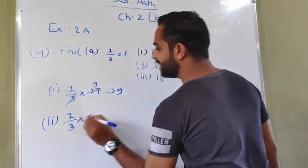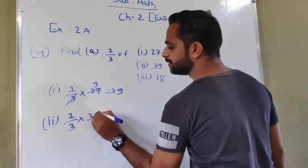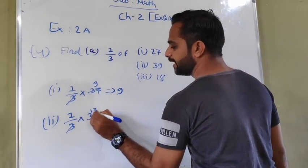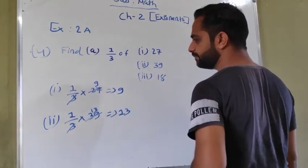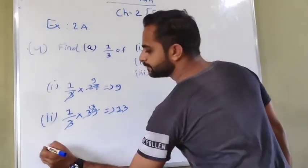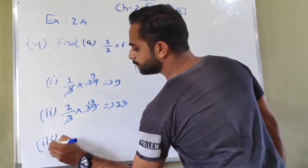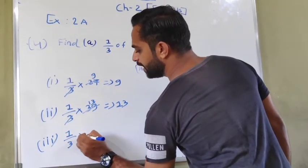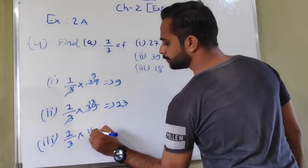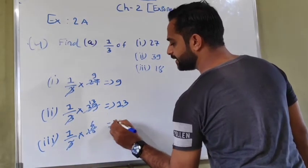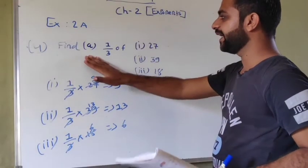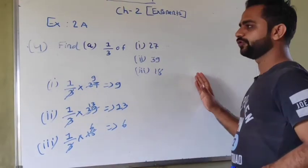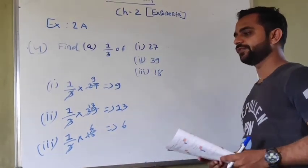Now 1 upon 3 multiplied by 39. 3 goes into 39 thirteen times. Next is 1 upon 3 multiplied by 18, which is 6. So this is our part A. Now part B you have to do. Now we start with fifth one.